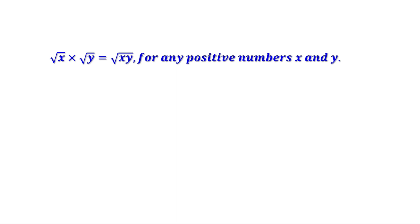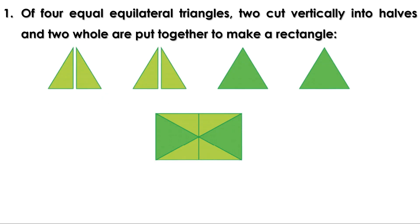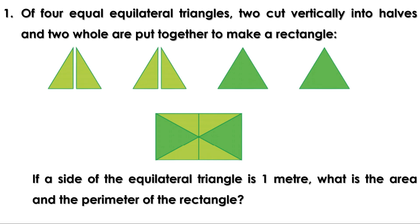There was a homework. Let us check the answer first. Of four equal equilateral triangles, two are cut vertically into halves and two are whole, and they are put together to make a rectangle. If a side of the equilateral triangle is one meter, what is the area and the perimeter of the rectangle?